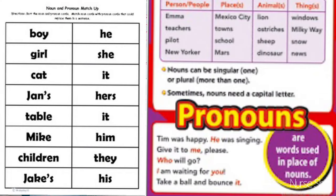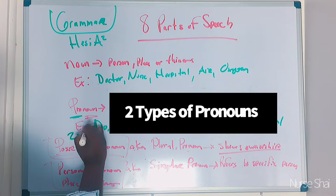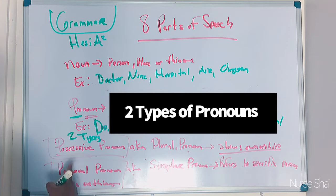Pronouns are words that replace nouns in a sentence. For example, instead of saying 'boy' — the noun — you use 'he.' Instead of 'girl,' use 'she.' Cat or table becomes 'it,' Mike becomes 'him.' For example, instead of 'Tim was happy,' we can say 'he was happy' or 'he was singing.' There are two different types of pronouns: possessive and personal.